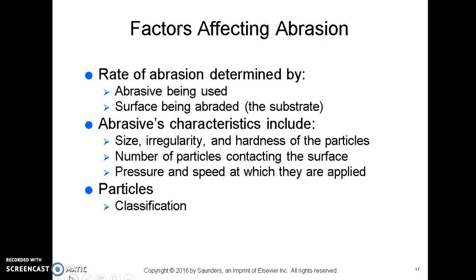Other factors affecting abrasion: the rate of abrasion is determined by the abrasive being used and the surface being abraded, which is called the substrate. If the substrate is harder than the abrasive, there will be no abrasion. If the substrate is too soft for the abrasive being used, a lot of damage will be done. Abrasive characteristics include size, irregularity, and hardness of the particles, as well as the number of particles contacting the surface and the pressure and speed at which they are applied.